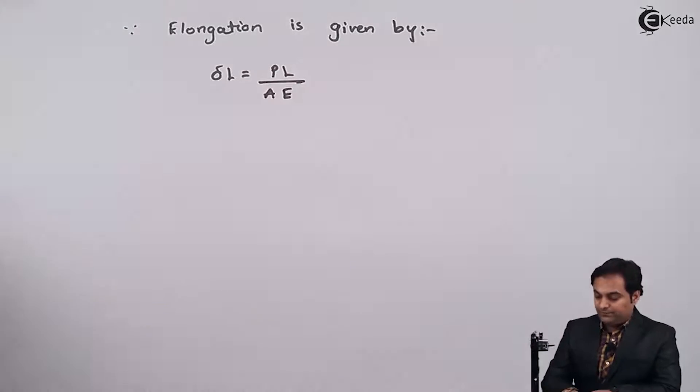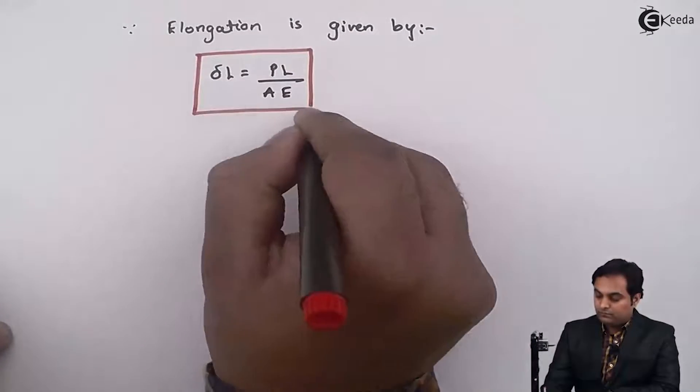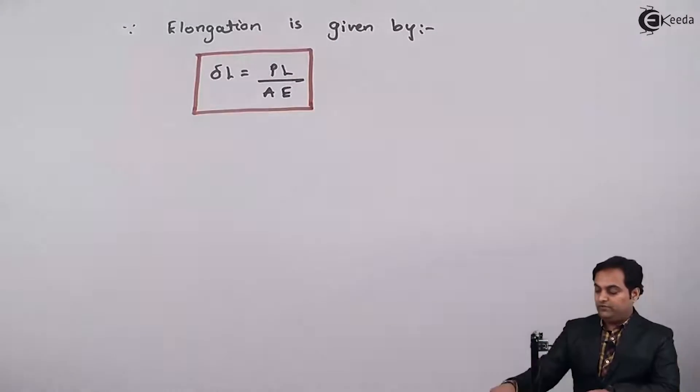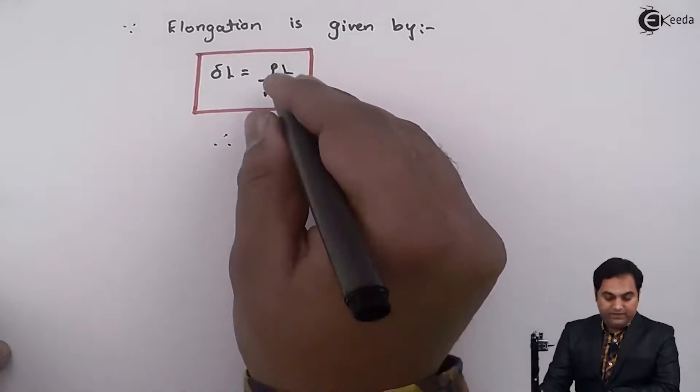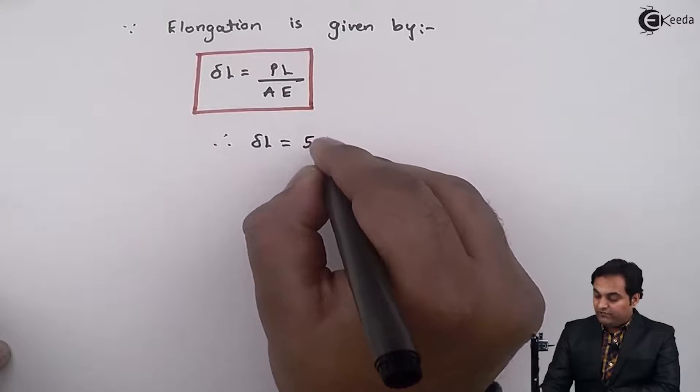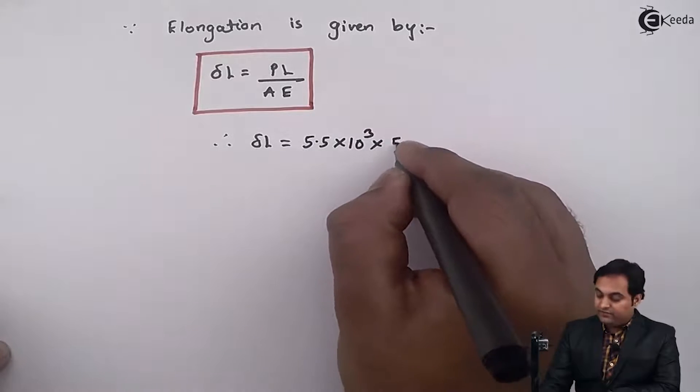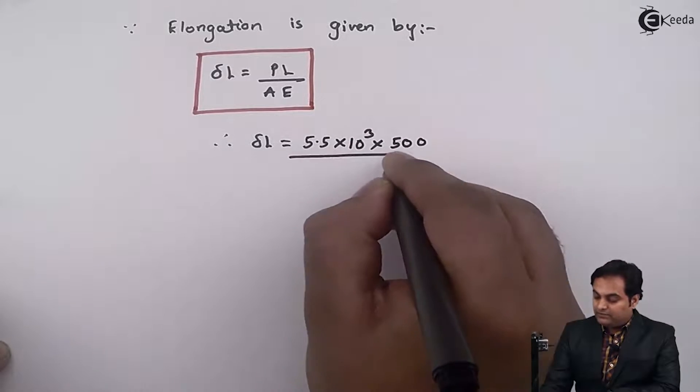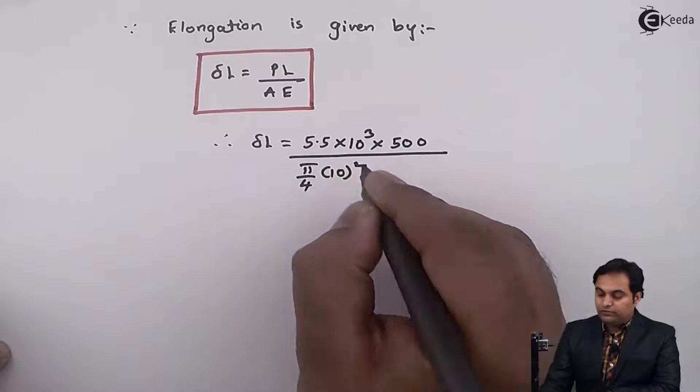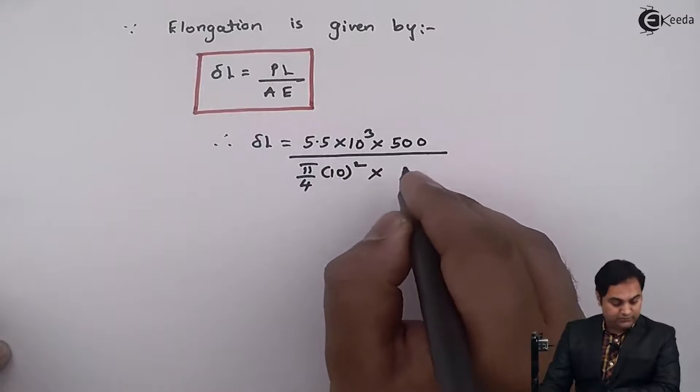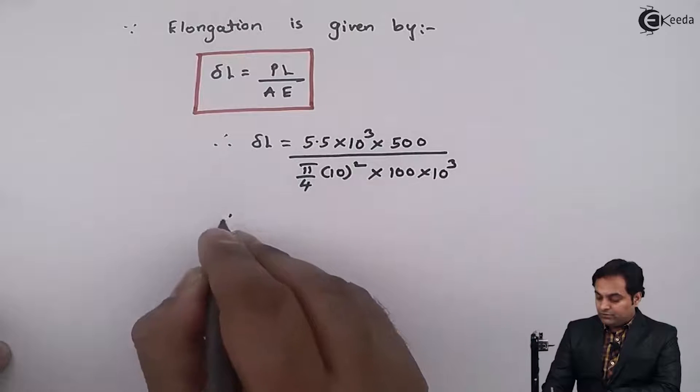Delta L is equal to PL upon AE. So therefore deflection will be equal to 5.5 into 10 raise to 3, length is 500. Area, diameter we have got it as 10, so area is pi by 4 into 10 square. Young's modulus is given as 100 into 10 raise to 3. So from this...